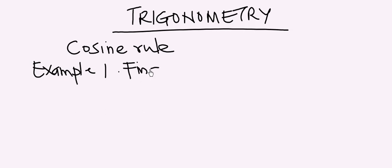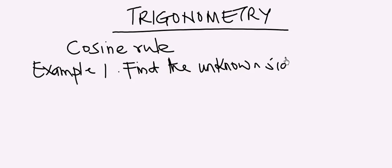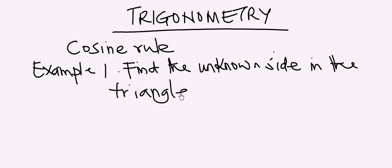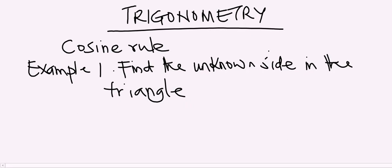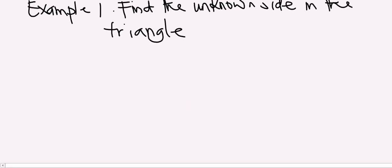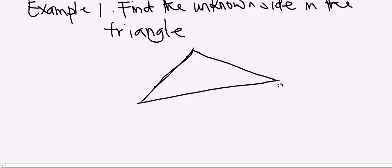Find the unknown side in the triangle. Now here is the triangle. This point is capital letter A, capital letter B, capital letter C. Angle B is given as 102 degrees.